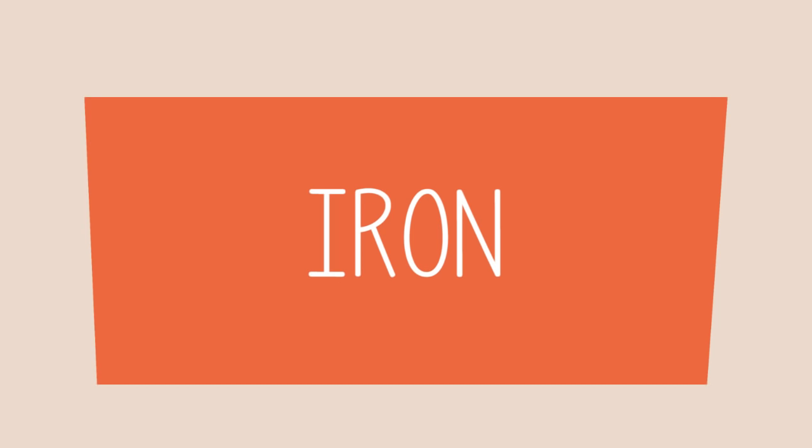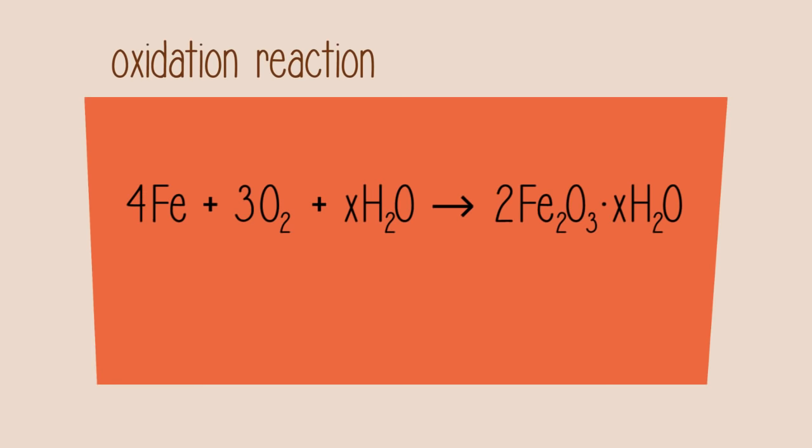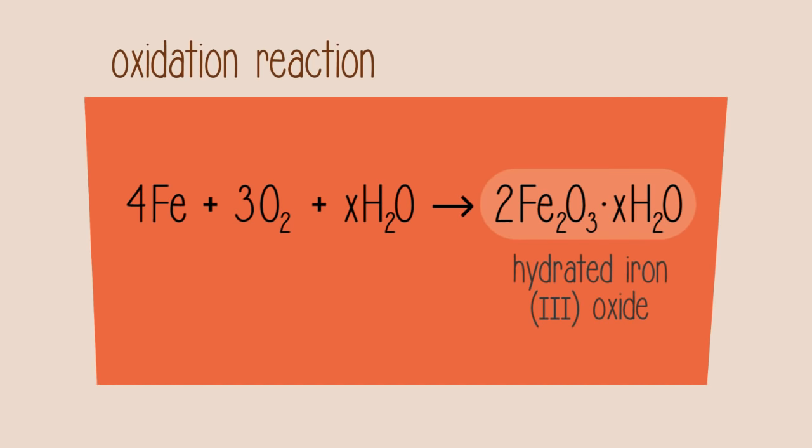So what has happened here? The iron has undergone an oxidation reaction, forming hydrated iron 3-oxide or rust. Salt and acid act as a catalyst for this reaction, which is why the nail in the second test tube formed more rust than the nail in the first test tube.